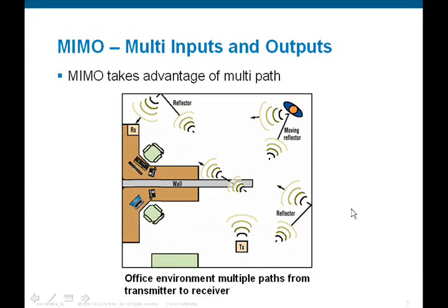This diagram illustrates a typical office environment like we're in today with cubicles. We have the transmitter at the bottom transmitting a signal, and multiple copies of that same signal arrive at the receiver — copies being delayed going through the front wall, copies bouncing off the right wall, copies bouncing off the back wall, as well as potentially some object moving through that space creating additional reflections.